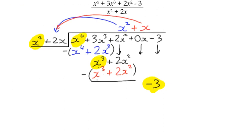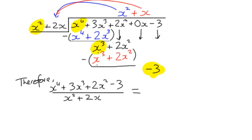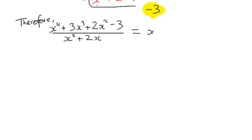We can write out our original function. x to the 4 plus 3x cubed plus 2x squared minus 3 over x squared plus 2x. So we're saying that that is going to be equal to our quotient and remainder. Our quotient is x squared plus x, and we've got this negative 3 as a remainder. And that means that, effectively, we've got negative 3 over x squared plus 2x as a remainder.